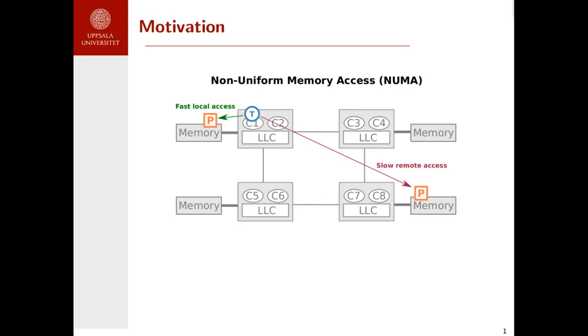If the thread and the page are on the same node, we have fast local accesses. On the other side, if they are on different nodes, we have slow remote ones. These are the non-uniform memory accesses that we optimize in our work.